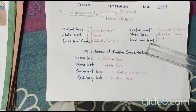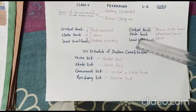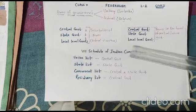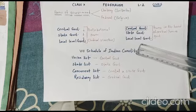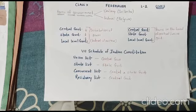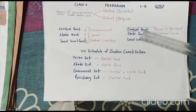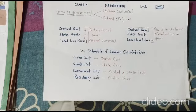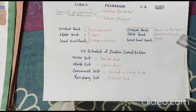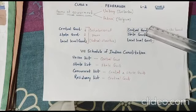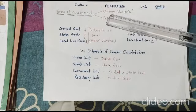Looking at central government, state government, and local level government — the name may vary from country to country. In our context, local level government is called PRI, that is Panchayati Raj Institutions. Now, if these three levels of government do not believe in distribution of power and power is in the hands of the central or union government, then this kind of form of government is called a unitary government.